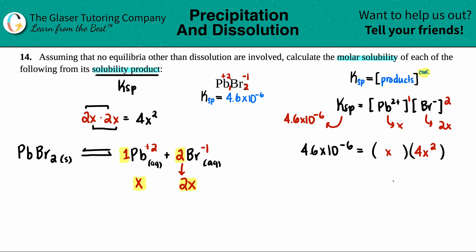going with the two X's. So I have a total of three X's here. So 4.6 times 10 to the negative six equals 4X cubed. Now we're just going back to algebra. I'm going to get X by itself. I'm going to divide by four.